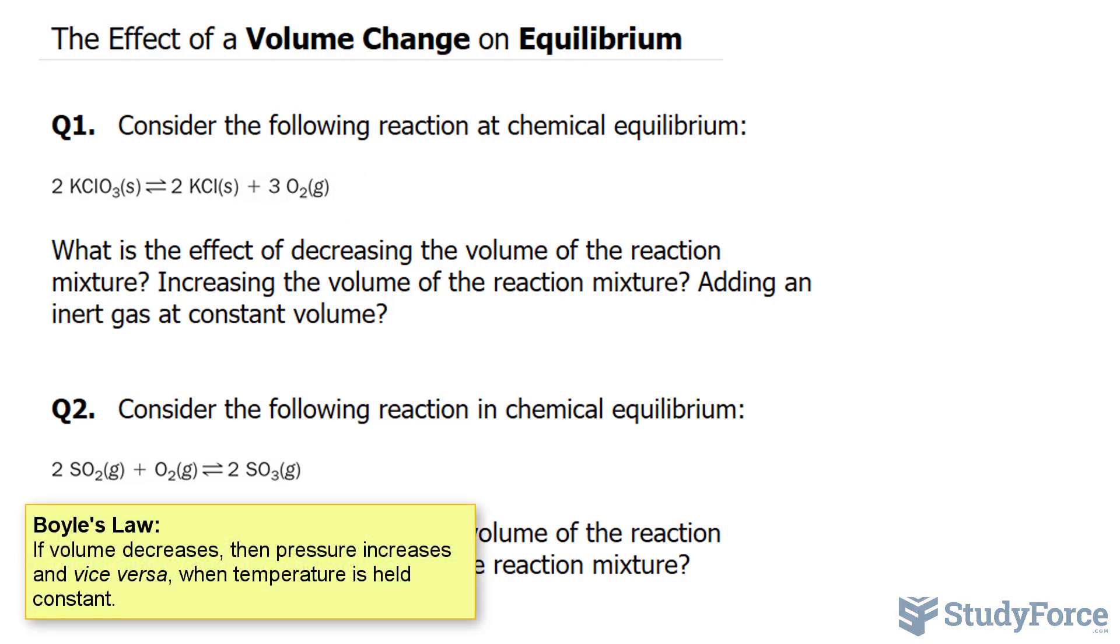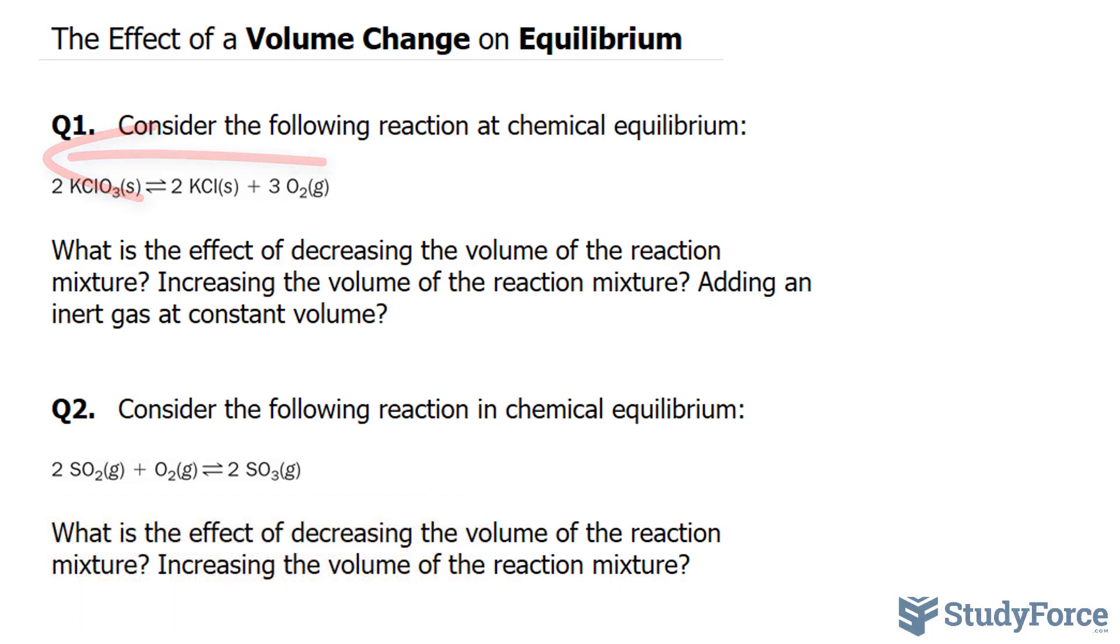Decreasing the volume of the reaction mixture increases the pressure and causes the reaction to shift to the left, given that there is only a gas on the right side. So in other words, by increasing the volume, the reaction goes towards where there are fewer moles of gas particles.